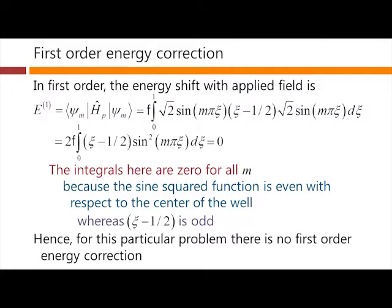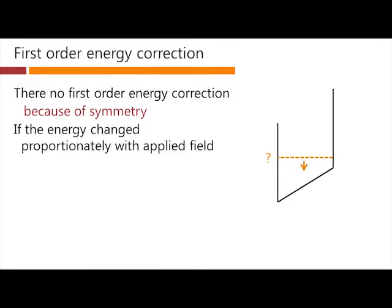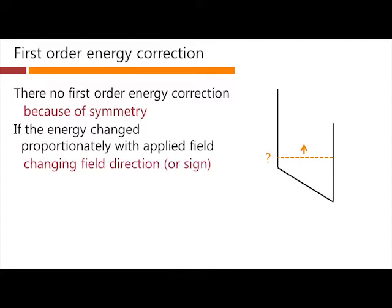Why is that? Well, there's no first order energy correction because of symmetry. Here's our problem. Before we put the field on, we've got our usual infinitely deep well. This is the first energy level within it. If the energy changed proportionately with applied field, suppose for some reason it went down here, changing the field direction or the sign would change the energy correction sign as well.